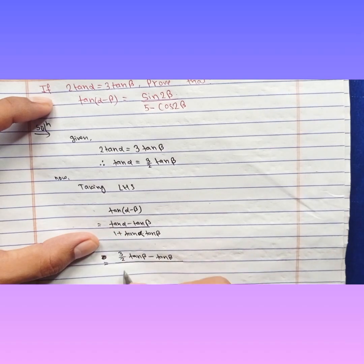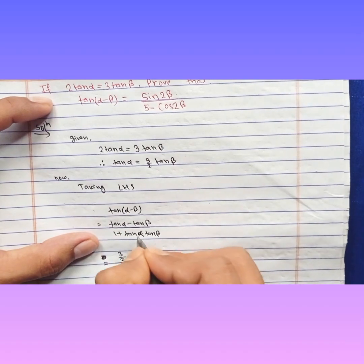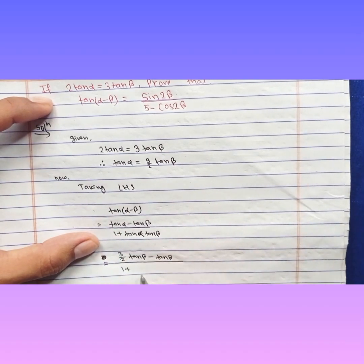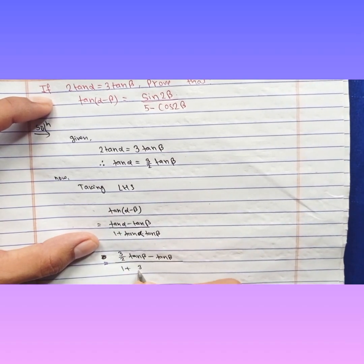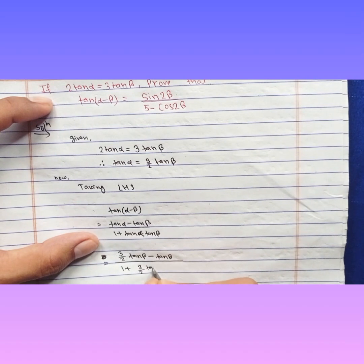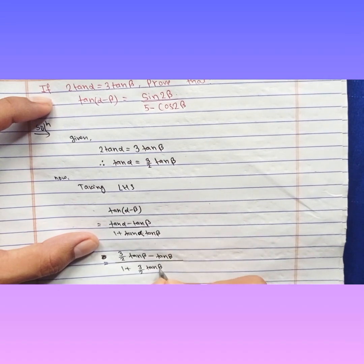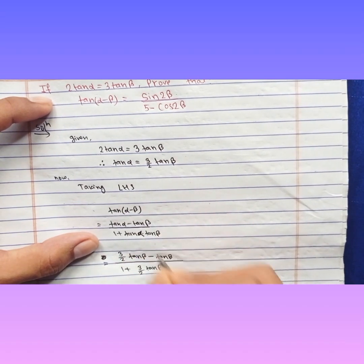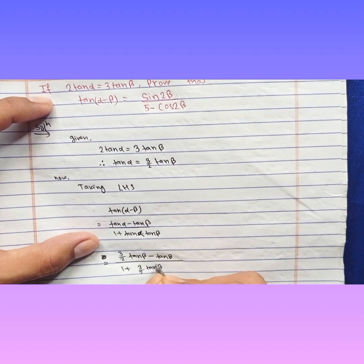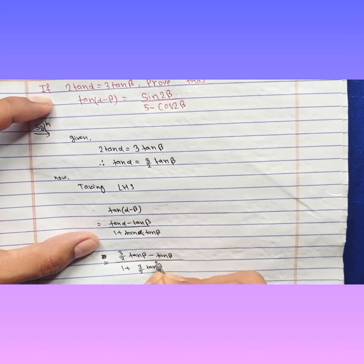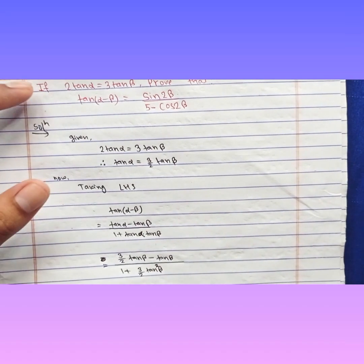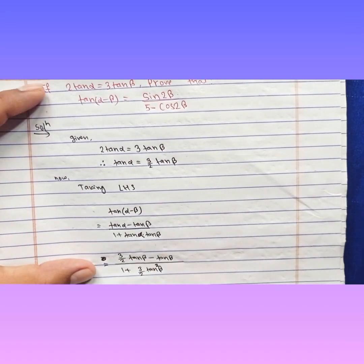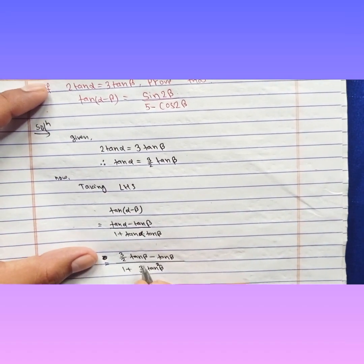In the denominator, 1 plus tan α can be written as 1 plus (3/2) tan β into tan β, and that gives us 1 plus (3/2) tan² β. You can also write tan² β directly.